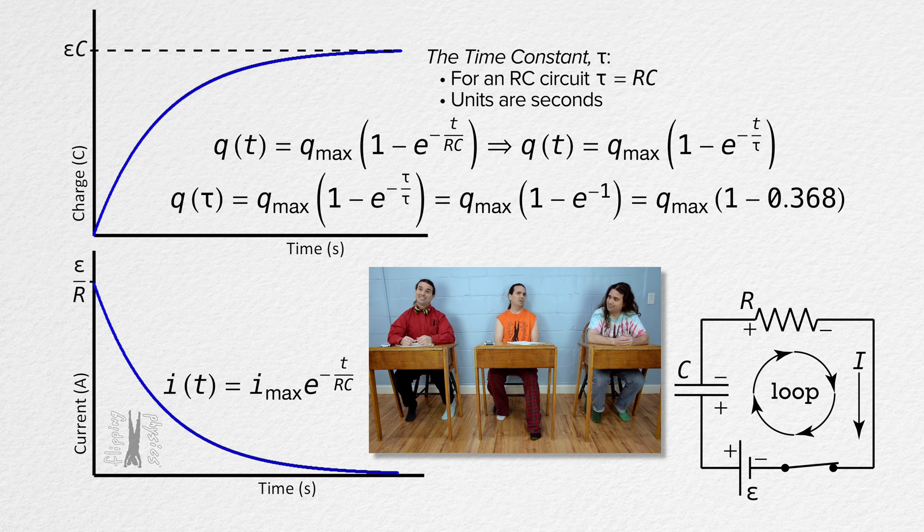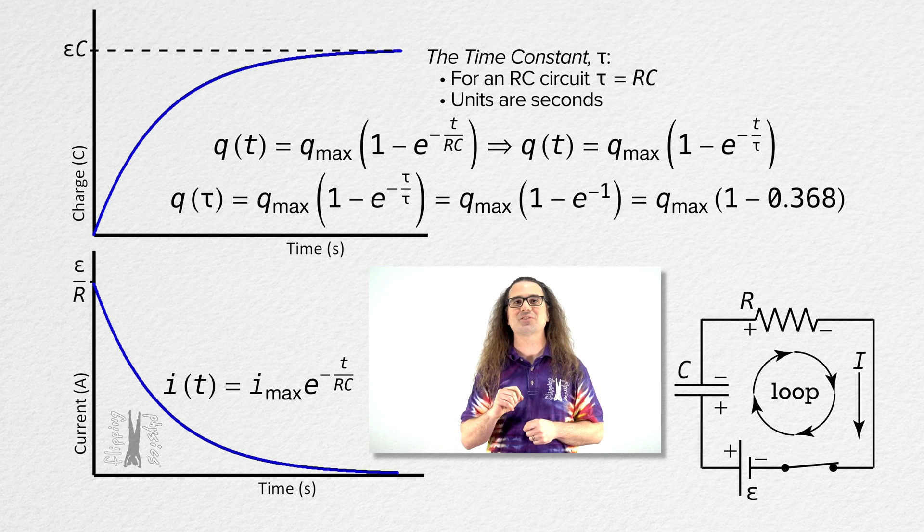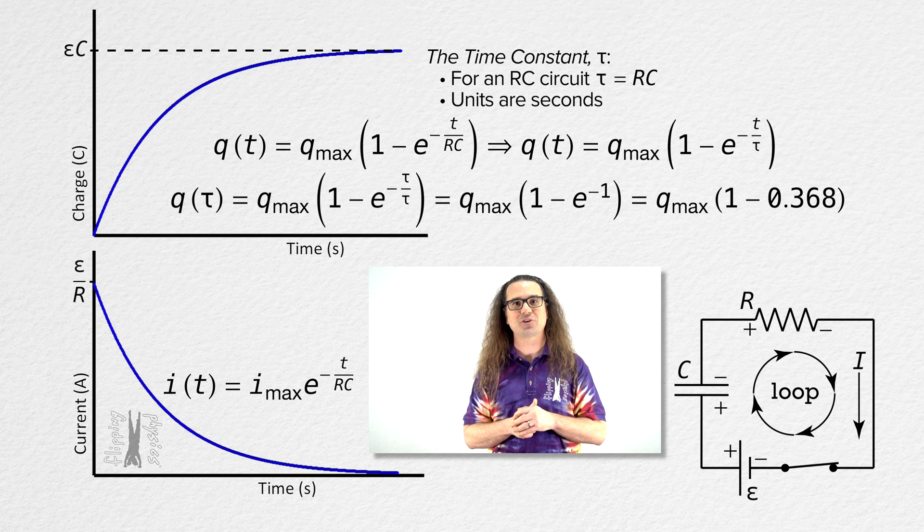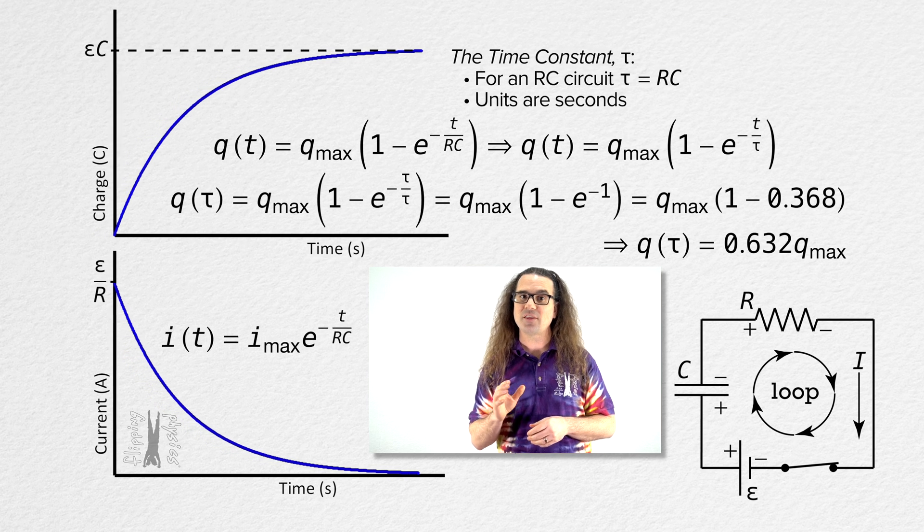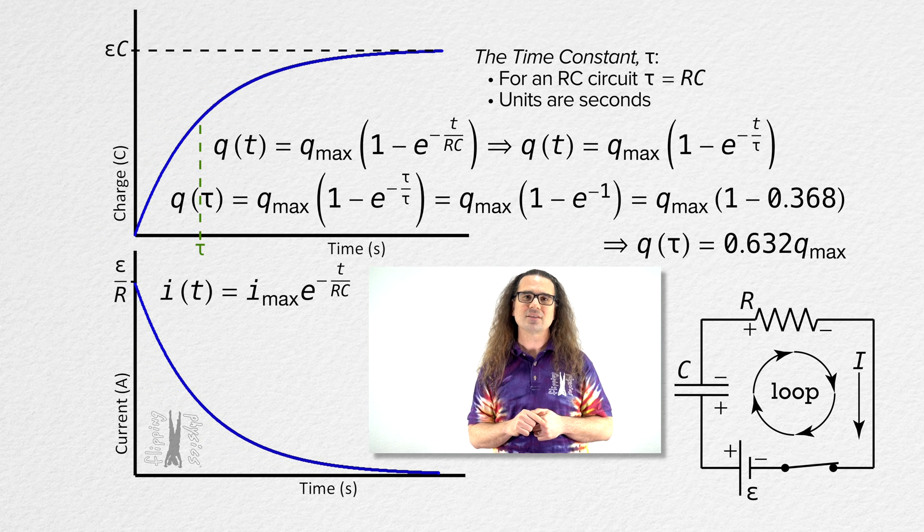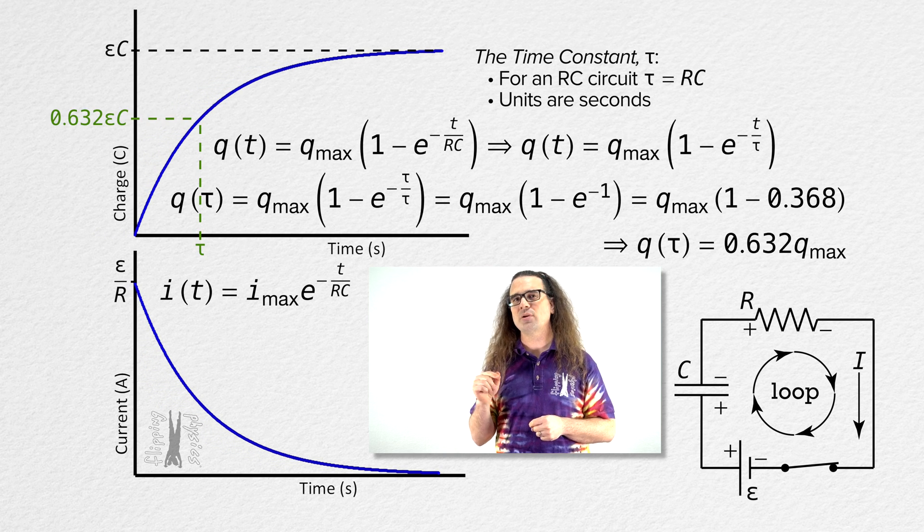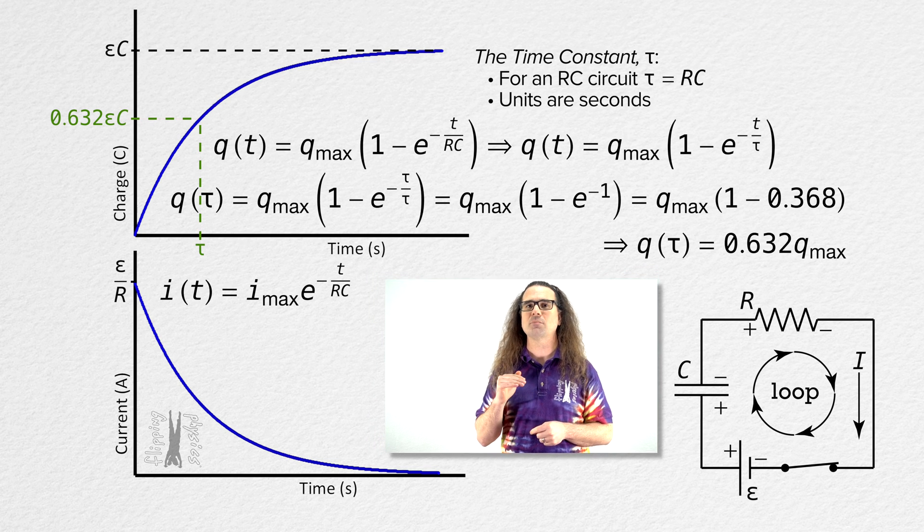Or down. And we get that the charge on the capacitor, one time constant after closing the switch, equals 0.632 times the maximum charge on the capacitor. In other words, after one time constant, the capacitor has reached 63.2% of its maximum charge.